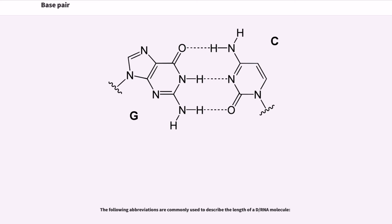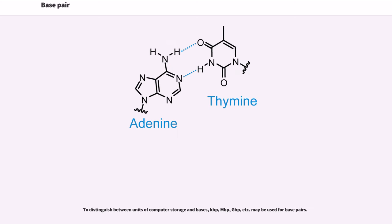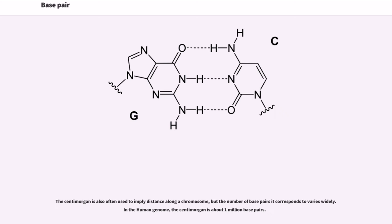The following abbreviations are commonly used to describe the length of a DNA/RNA molecule. For single-stranded DNA/RNA, units of nucleotides are used, abbreviated nt (or knt, Mnt, Gnt), as they are not paired. To distinguish between units of computer storage and bases, kbp, Mbp, Gbp, etc. may be used for base pairs. The centimorgan is also often used to imply distance along a chromosome, but the number of base pairs it corresponds to varies widely. In the human genome, the centimorgan is about 1 million base pairs.